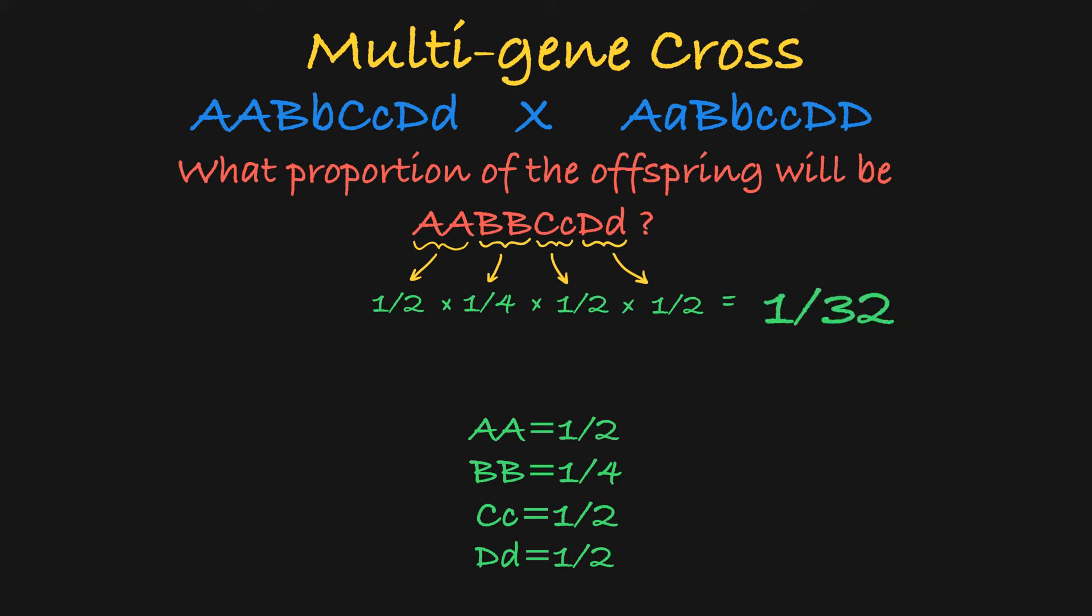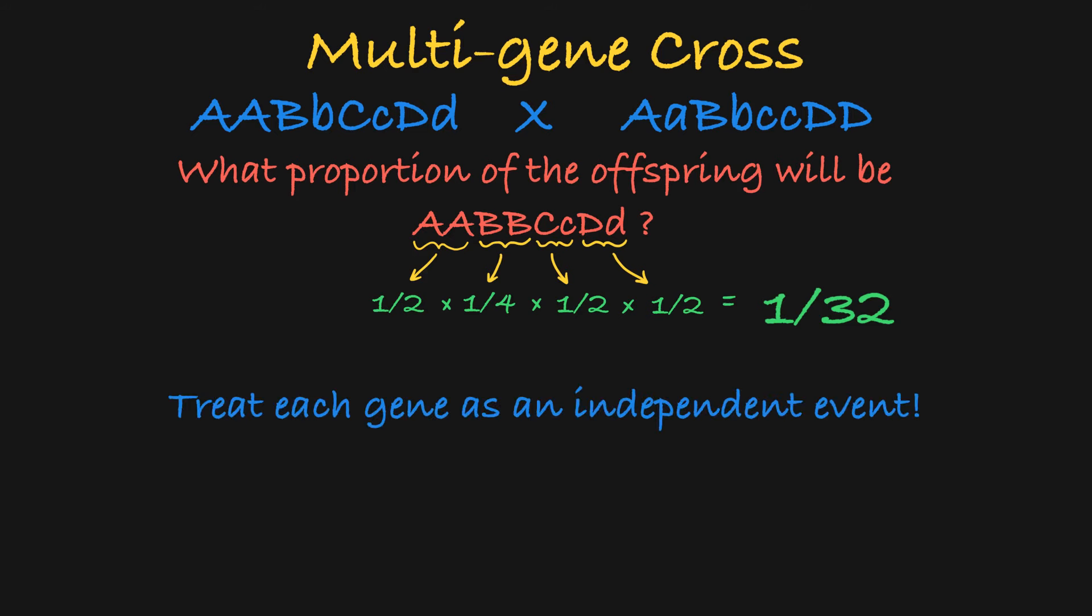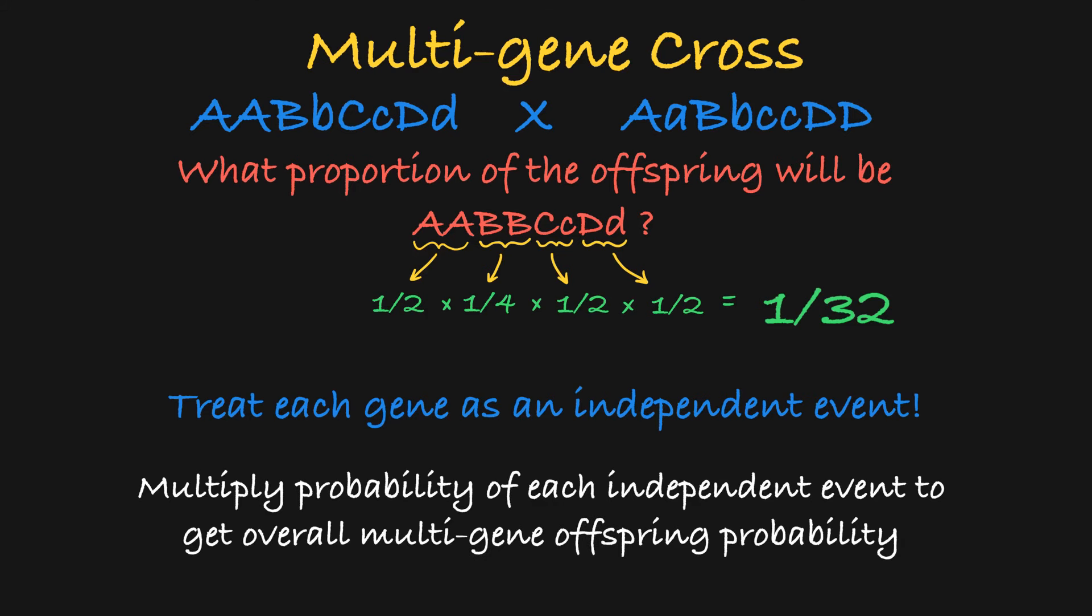So, to recap, in multi-gene problems with unrelated genes, all you need to do is treat each gene as an independent event and then multiply the probabilities of the smaller events together to get a multi-gene probability.